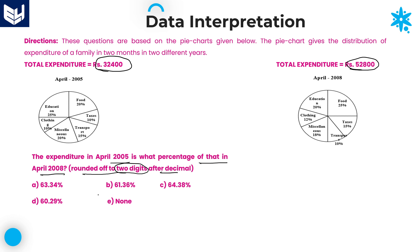In some cases where 'none of these' is not provided, the options all start with 1, but the second digits differ — 3, 1, 4, or 0 — and you can stop at that point. But in this case, 'none of these' is there, so you need to calculate the entire calculation.